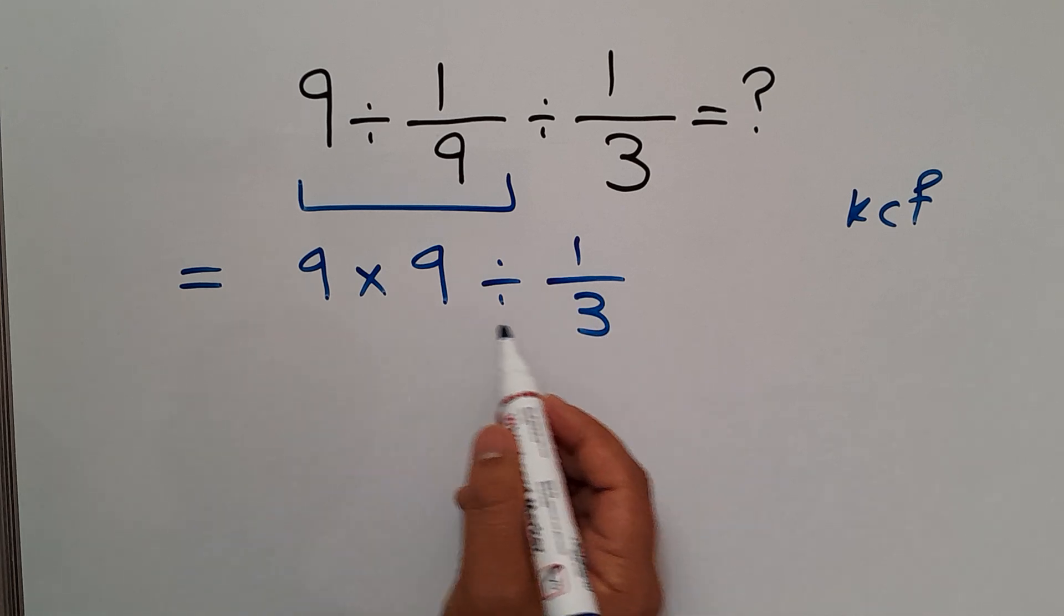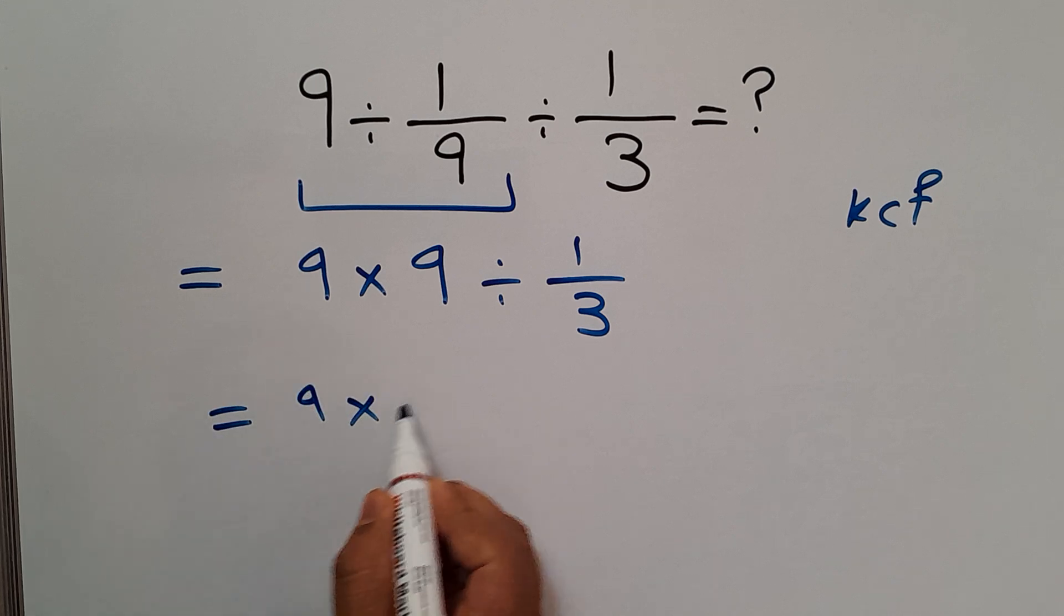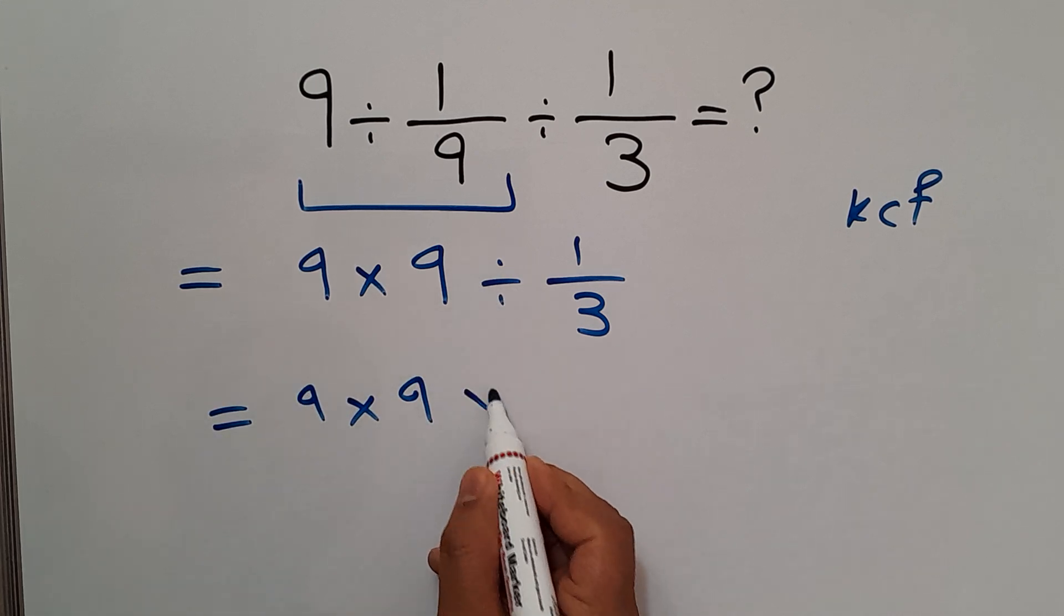And again according to the KCF rule, we can write 9 times 9, change division to multiplication, and flip this fraction, times 3.